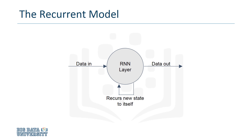The RNN only has one layer, but it maintains a state or a context in order to remember the analysis that it's done up to that point. This state recurs back into the net with each new input, which is where the net gets its name.